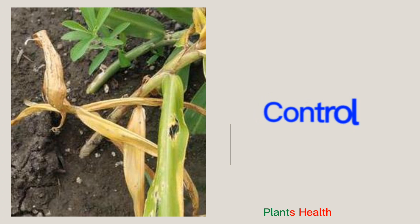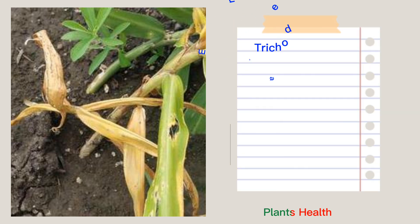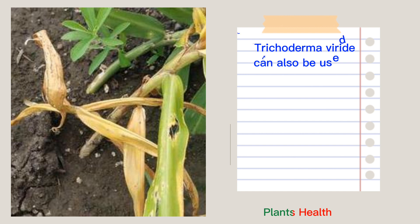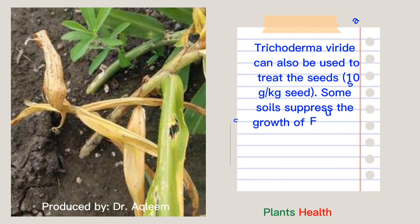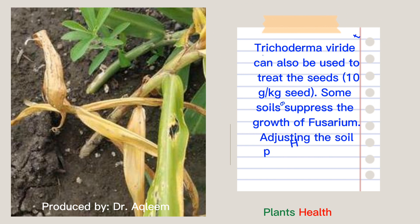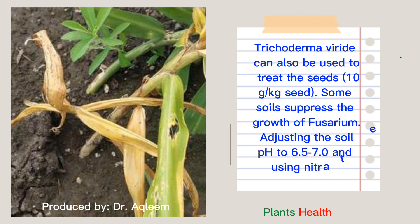Control. Trichoderma viride can also be used to treat the seed. Some soils suppress the growth of Fusarium. Adjusting the soil pH to 6.5–7.0 and using nitrate as a nitrogen source can help.